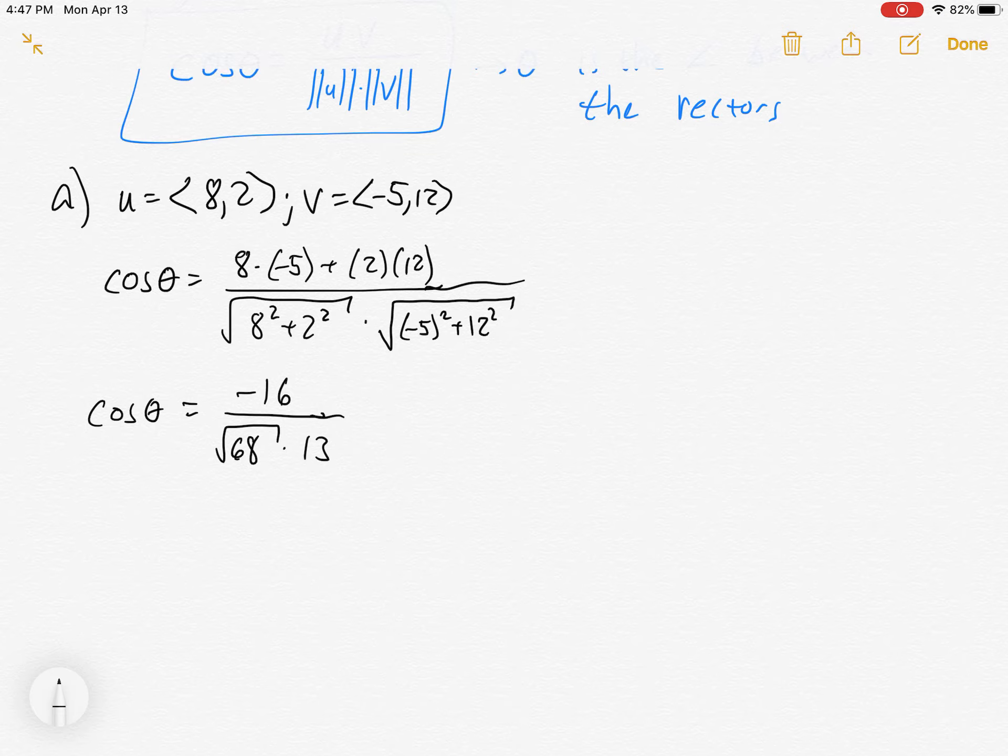So you put that in your calculator. I personally do negative 16 divided by and then parentheses 13 square root 68. You got to make sure all of 13 square root 68 is in the parentheses. So make sure you can do this and you get 98.58 degrees. So please practice that. Make sure you can get that answer. It's obtuse.